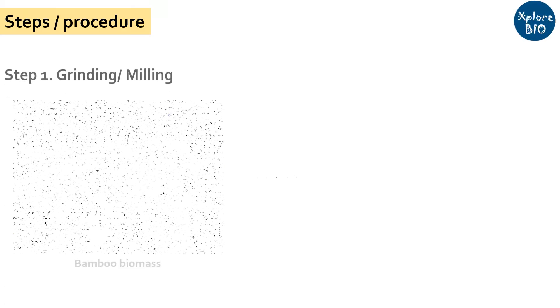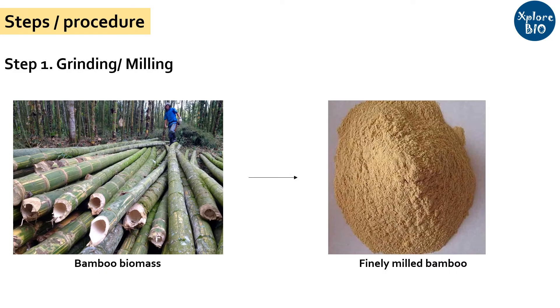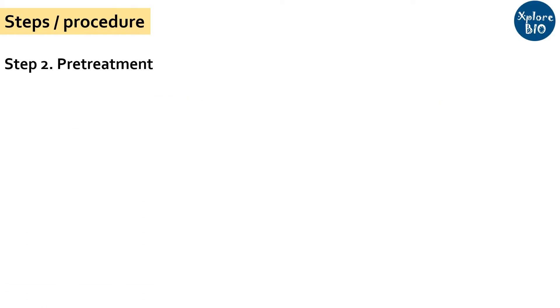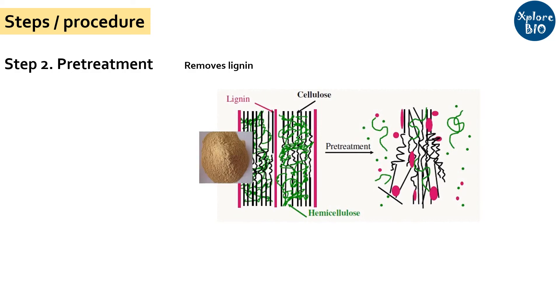Now let's have a deeper look at the basic steps involved in the bioethanol production from bamboos. The first step is milling of bamboo to fine particles to increase its surface area and facilitate further processing. The next step is pretreatment. As bamboos have lignin which interferes with enzymatic reactions during hydrolysis and fermentation, it needs to be removed. For this, the milled bamboo biomass is exposed to a solution of dilute alkali like sodium hydroxide at a high temperature of about 100 to 180 degrees for a few minutes to a few hours with continuous mixing.